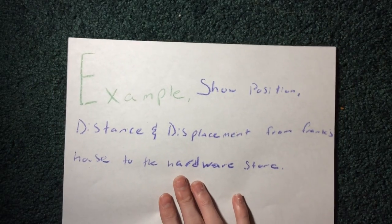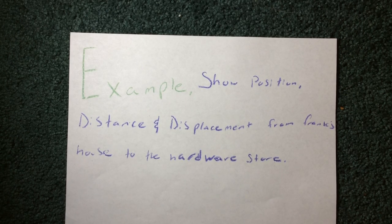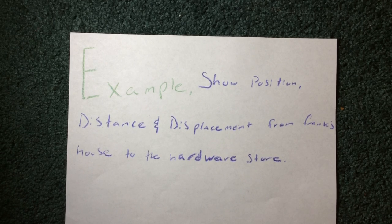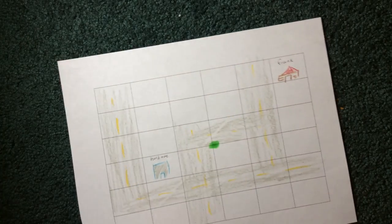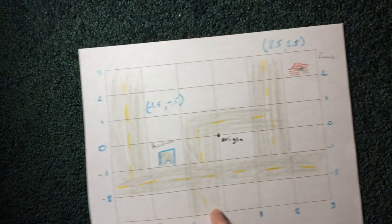So now for an example problem to kind of show you how these are actually used. For my example problem, I have show position, distance, and displacement from Frank's house to get to the hardware store. Now this doesn't make any sense, but that's okay, because I have this little picture right here. So this is Frank's house, this is the hardware store, and then I've marked the origin. So we're going to show all three here, starting with position.